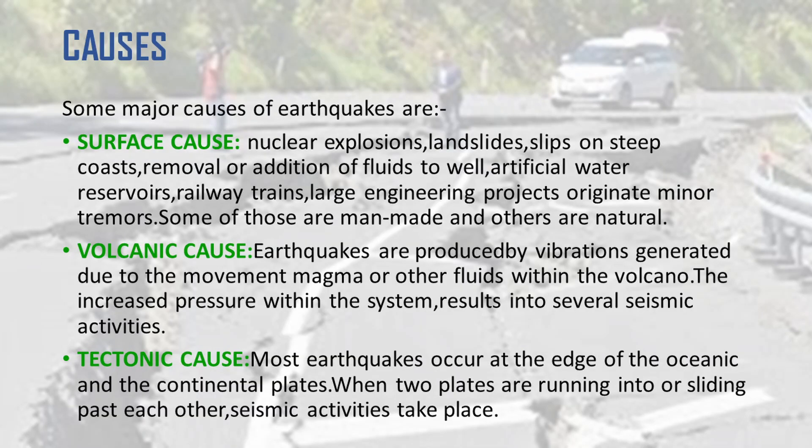There is a question rising in your mind: why do earthquakes happen? There are three major causes. The first cause is surface cause, which includes man-made and natural causes like nuclear explosion, slip on fault, removal or addition of fluids to wells, and many others. The second is volcanic cause, which is caused due to the movement of magma within the volcano, and happens due to an increase in pressure.